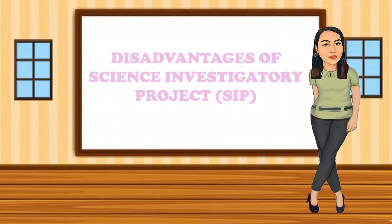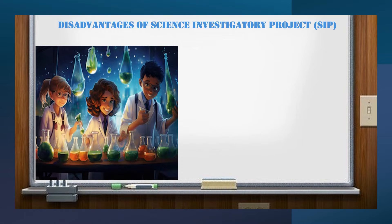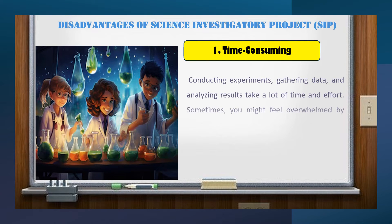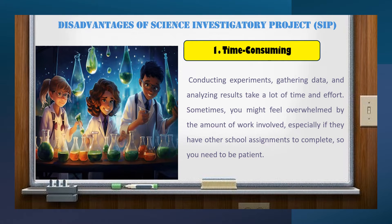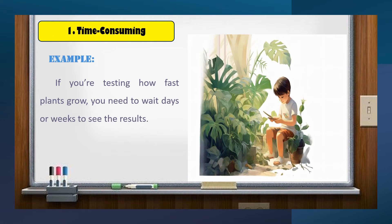Now let's discuss the disadvantages of science investigatory projects, or SIPs. While they offer numerous benefits, it's important to be aware of some challenges you might face. First, SIPs can be quite time-consuming. Conducting experiments, gathering data, and analysing results take a lot of time and effort. Students might feel overwhelmed by the amount of work involved, especially if they have other school assignments to complete. So you need to be patient. If you're testing how fast plants grow, you need to wait days or weeks to see the results.